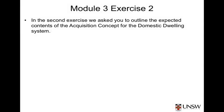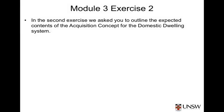In the second exercise, we asked you to outline the expected contents of the acquisition concept of the domestic dwelling system. The acquisition concept should provide an explanation of how the system will be developed and then brought into service. It doesn't say how the system will function, but rather how those functions are going to be delivered — covering areas such as who are the interested parties and how will they be managed, how are the requirements going to be developed, who will be responsible for gathering those requirements, who will be the key contractors and how are they going to be managed, how will the design be developed, and how will the system be built and tested.